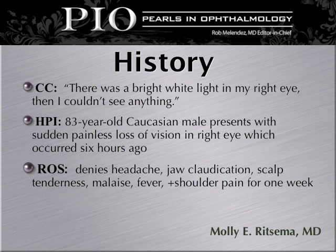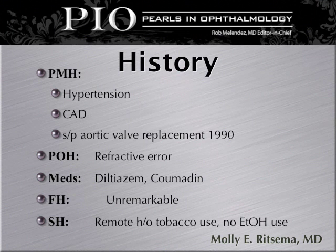This is a patient that presented with a bright white light in his right eye and he could not see anything. It was an 83-year-old Caucasian male who presented with sudden painless loss of vision in his right eye which occurred six hours prior to presentation. Review of systems was positive for shoulder pain for one week. His past medical history was remarkable for hypertension, coronary artery disease, and status post aortic valve replacement in 1990. Medications include diltiazem and Coumadin, and social history was remarkable for remote history of tobacco use.